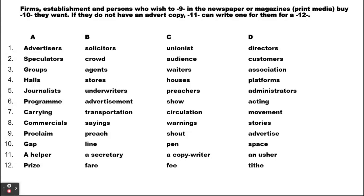If they do not have an advert copy, [11] can write one for them for a [12]. Number eleven: a helper, a secretary, a copywriter or an usher — it is a copywriter who writes an advert copy. And then a copywriter charges: price, fee, fee or type — the answer is fee. So that brings us to the end of today's lesson.